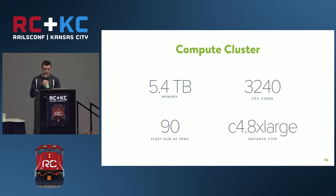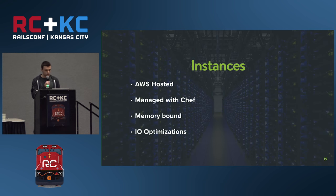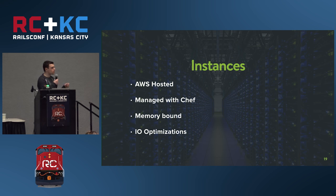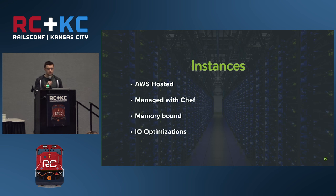Our compute cluster peaks at 90 C4 8XLarge instances in EC2, giving us about 5.4 terabytes of memory and over 3,200 cores. The cluster is hosted in AWS, auto-scaled, and managed with Chef and pre-built AMIs. The instances are memory-bound because the containers we run include all services required for Shopify to boot. We also use RAMFS on the machines due to the write-heavy workload from downloading large numbers of containers.